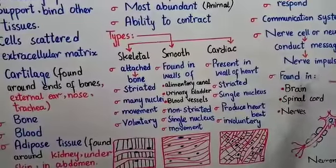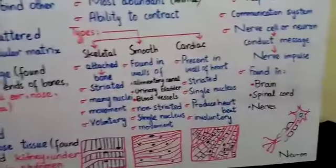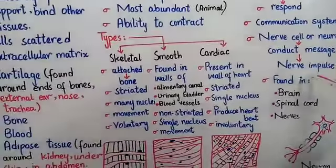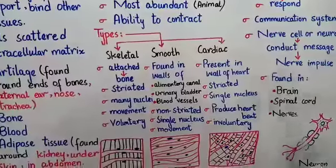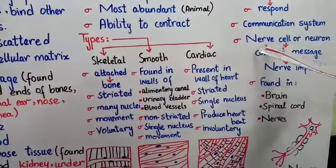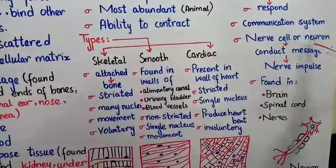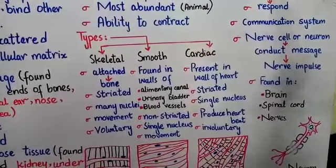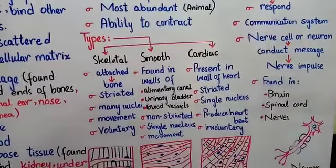The nerve impulse is a wave of electrochemical changes. This is the message transferred in your body. The message is carried by nerve cells and neurons, which are the type of nervous tissue.